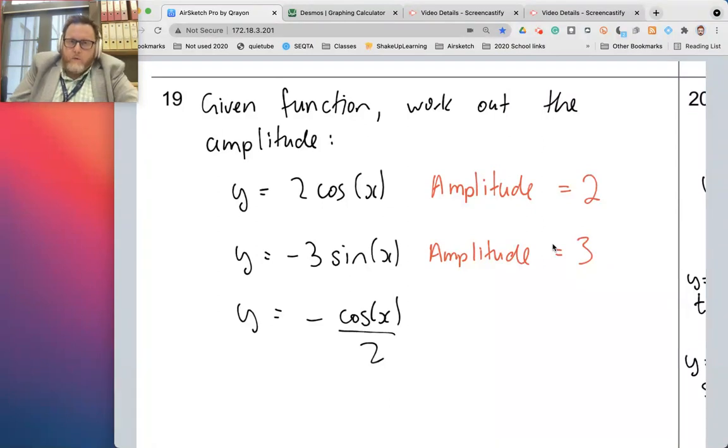Third one, negative cos x over 2. I deliberately chose this one because it's not necessarily straightforward to see what that means. That is the same as negative a half cos x. Dividing by 2 is the same as multiplying by a half. So if I've divided cos x by 2, it's the same as a half times. Again, what is the amplitude now? Can you see it? I hope you said it was a half and not negative a half. That's it for amplitude. That's basically all you have to do for working that out.